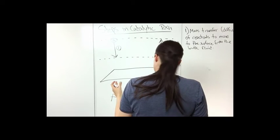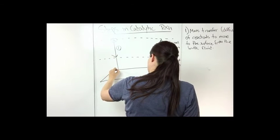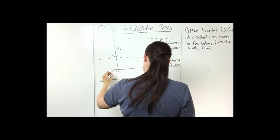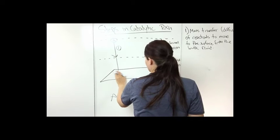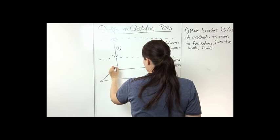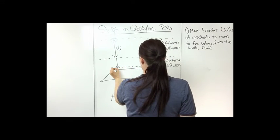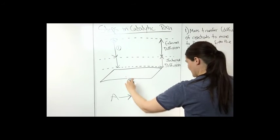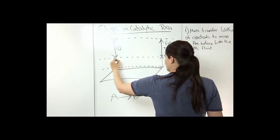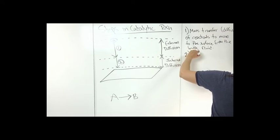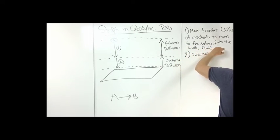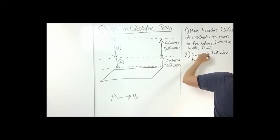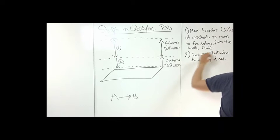So then the next thing it needs to do is that it diffuses through the catalyst pores, to the immediate vicinity of the internal catalytic surface. So that's right here. And actually I'm not going to draw this right on the surface yet, because it hasn't absorbed. So now it's at the surface of the internal site or vicinity of the internal catalytic surface right before it absorbs to the surface. So this would be step two. So two is internal diffusion to vicinity of catalytic surface.